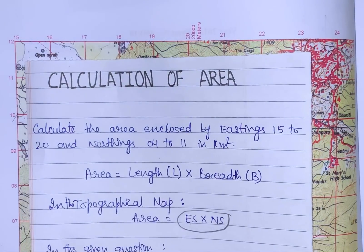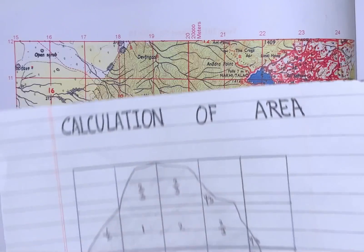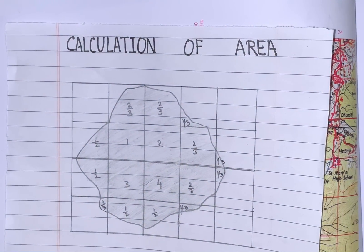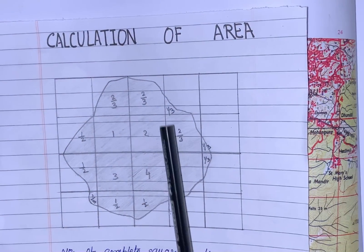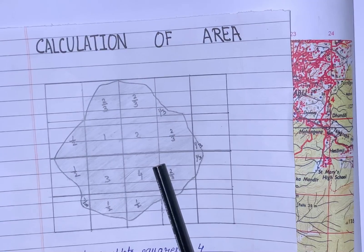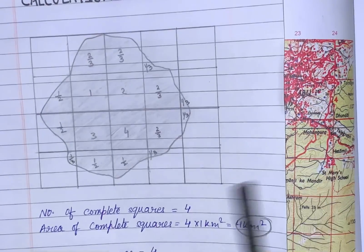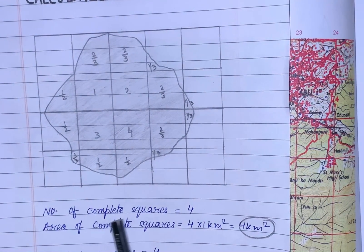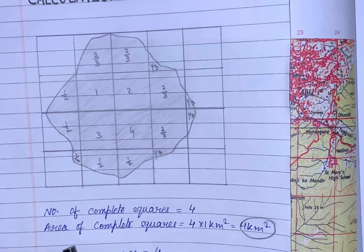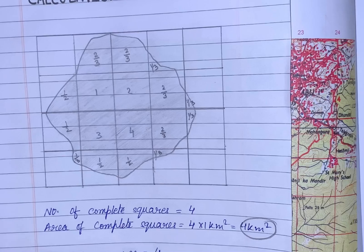Suppose the question is: Calculate the area in the topographical map of only the shaded part. Then how will we do the measurement? First step, we will count the number of complete squares: 1, 2, 3, 4. Then the area of complete squares will be four kilometers square.